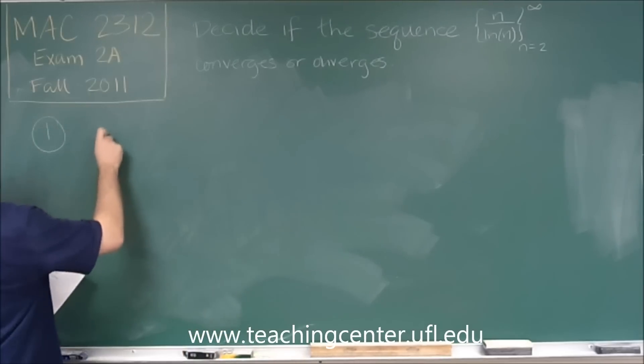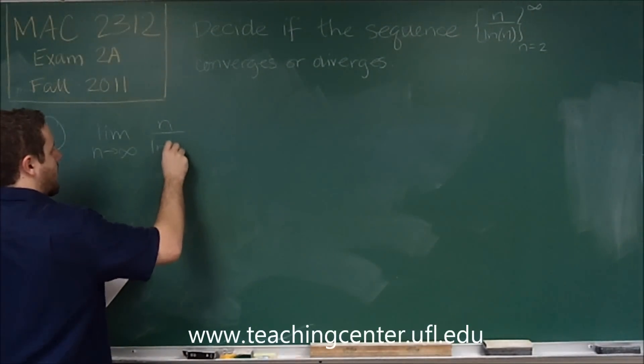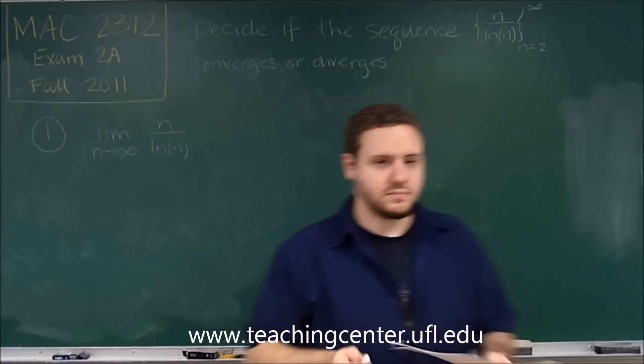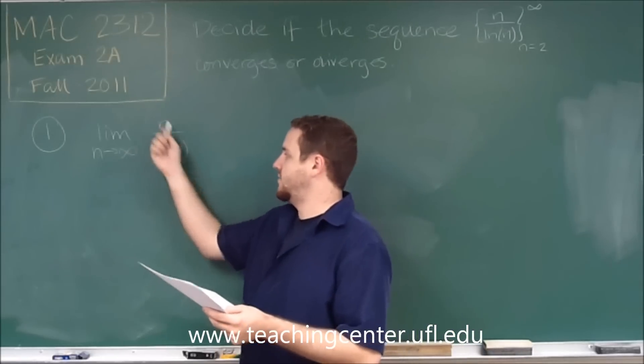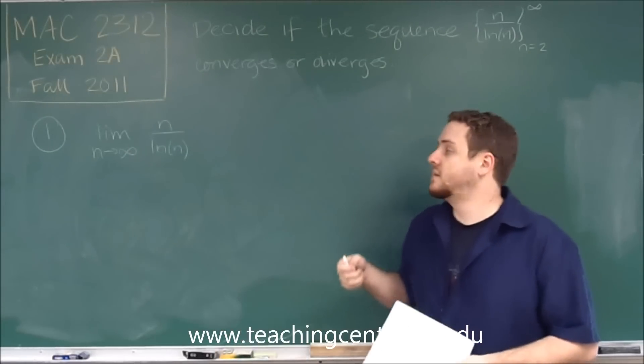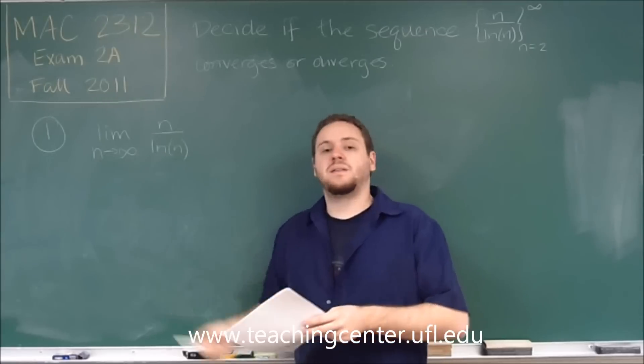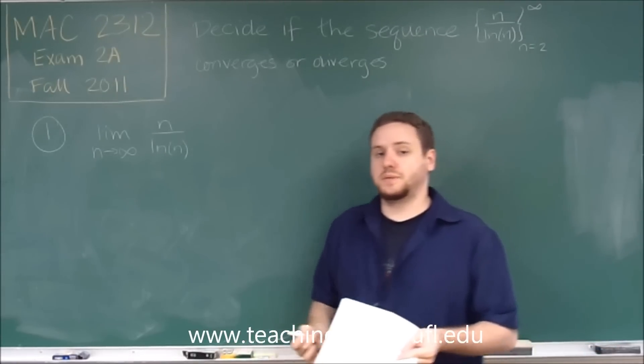So what we want to calculate is the limit of n divided by ln of n. Now, n divided by ln of n, as n goes to infinity, is indeterminate, because as n goes to infinity, the top is clearly infinity, and ln of infinity is also infinity. So we have an indeterminate form, and for this we can use L'Hôpital's rule.